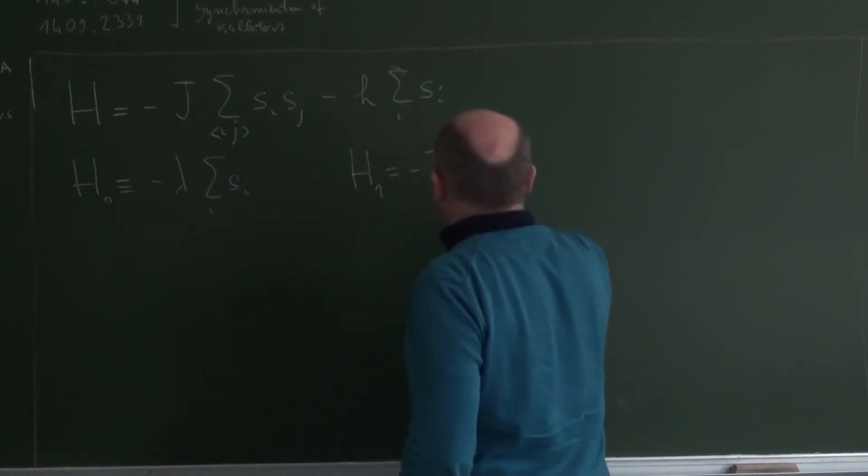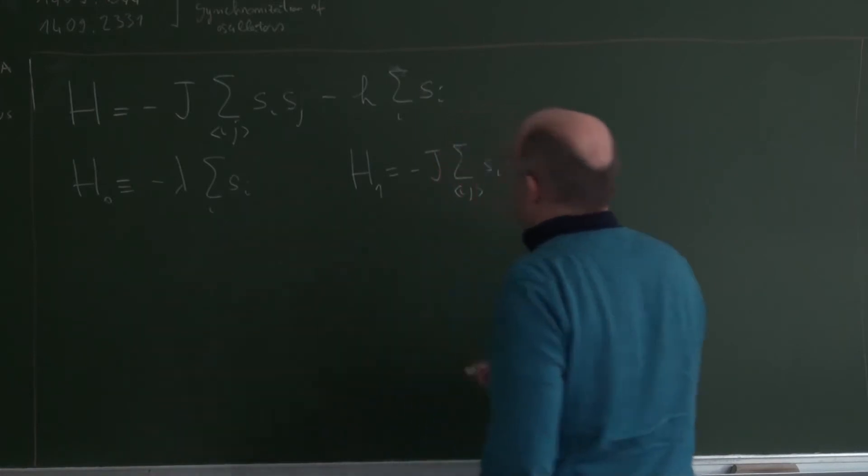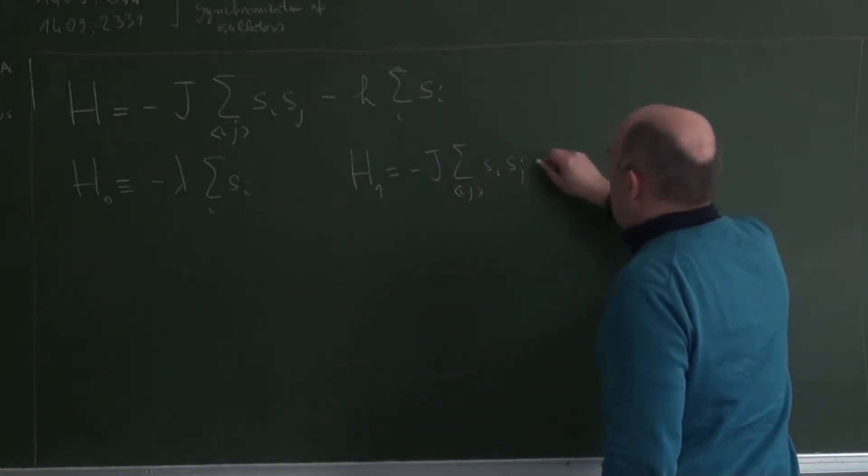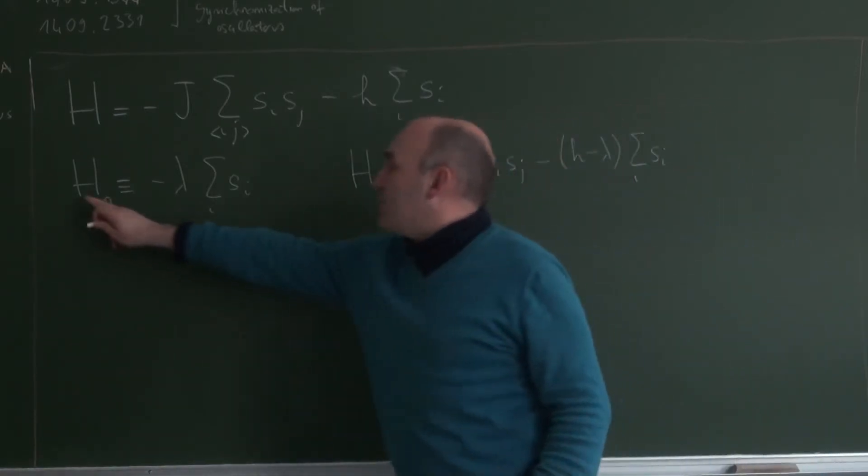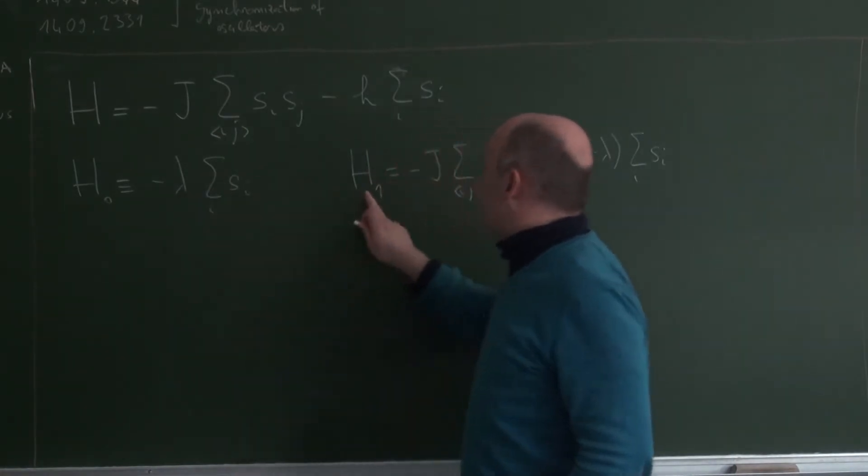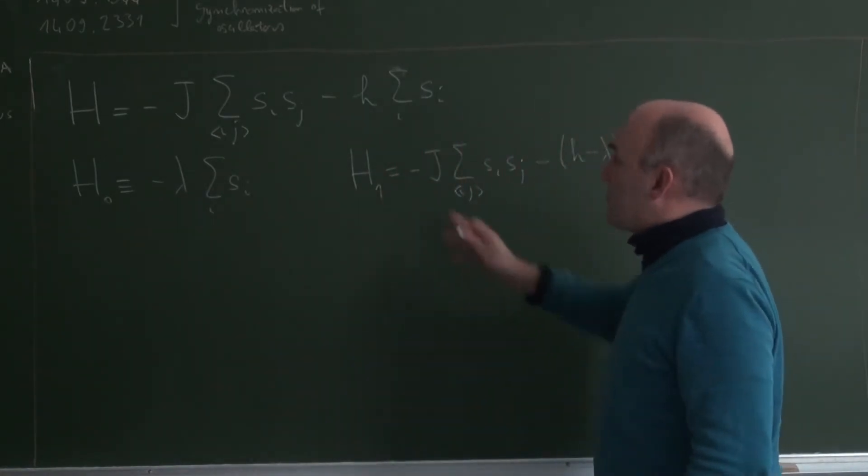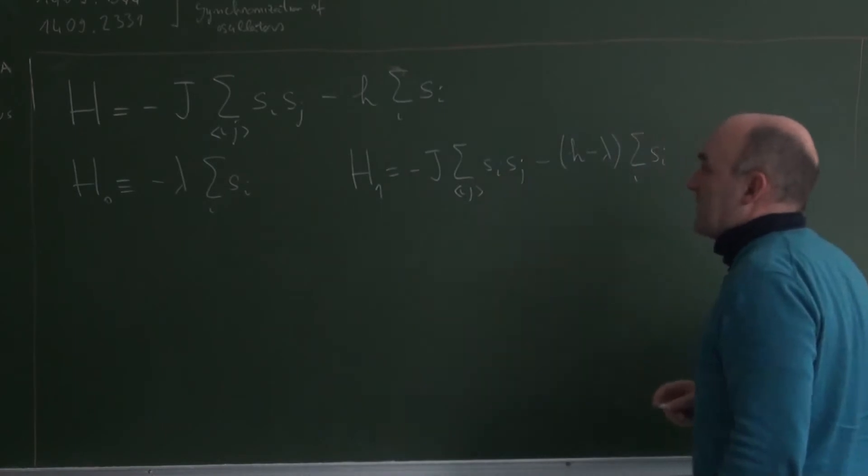And the second part is the part which contains the interactions. It's minus J sum over IJ Si Sj. Then we add minus H minus lambda sum of i Si. So what we see is that both parts depend on the parameter lambda. But the sum of the two is H, which is independent on lambda.